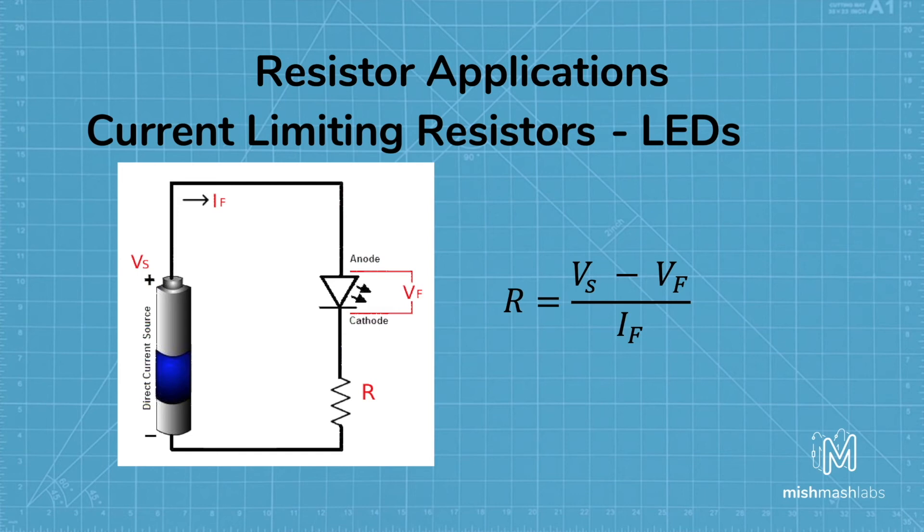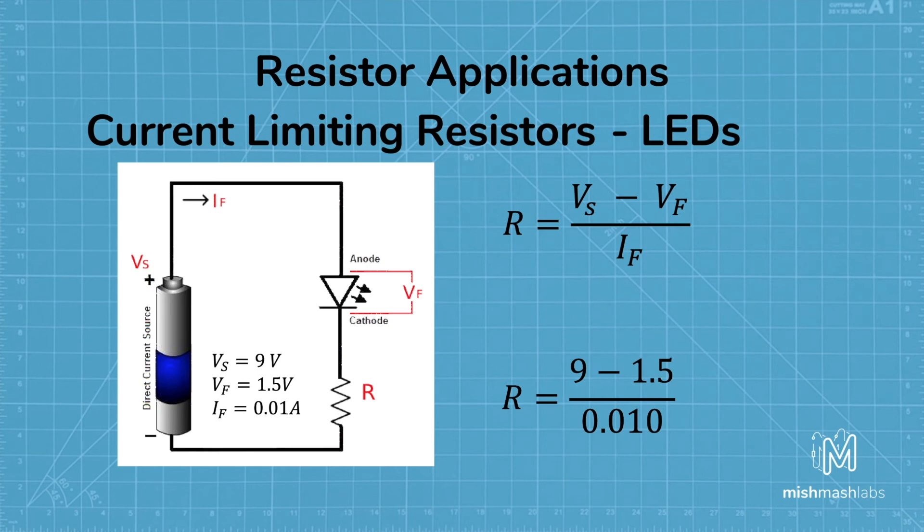Once you have acquired these two values, you can size up your current limiting resistor with the following equation. The resistance is equal to the voltage source minus the forward voltage, and dividing that total by the forward current. Here's an example of a voltage source of 9 volts, a forward voltage of 1.5 volts, and a maximum current of 10 milliamps. So let's plug that into our equation. So we have 9 minus 1.5 over 0.01, and that gives us a current limiting resistor size of 750 ohms.